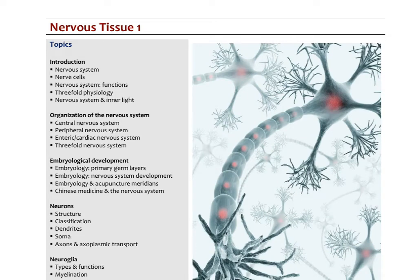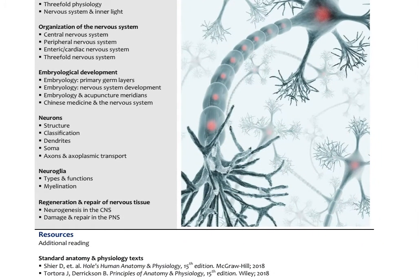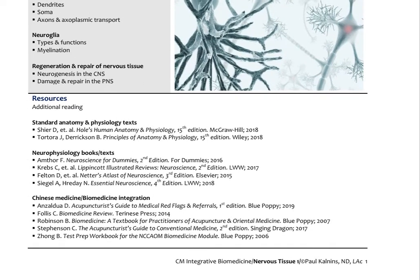This is the first lecture on neurophysiology. We're going to look at the whole structure of the nervous system from an integrated perspective, examining how the nervous system relates to metabolic processes in the body. Then we'll look at embryological development and tie that into acupuncture, how the acupuncture meridians — especially the extraordinary vessels — have an interesting parallel with the development of the nervous system.